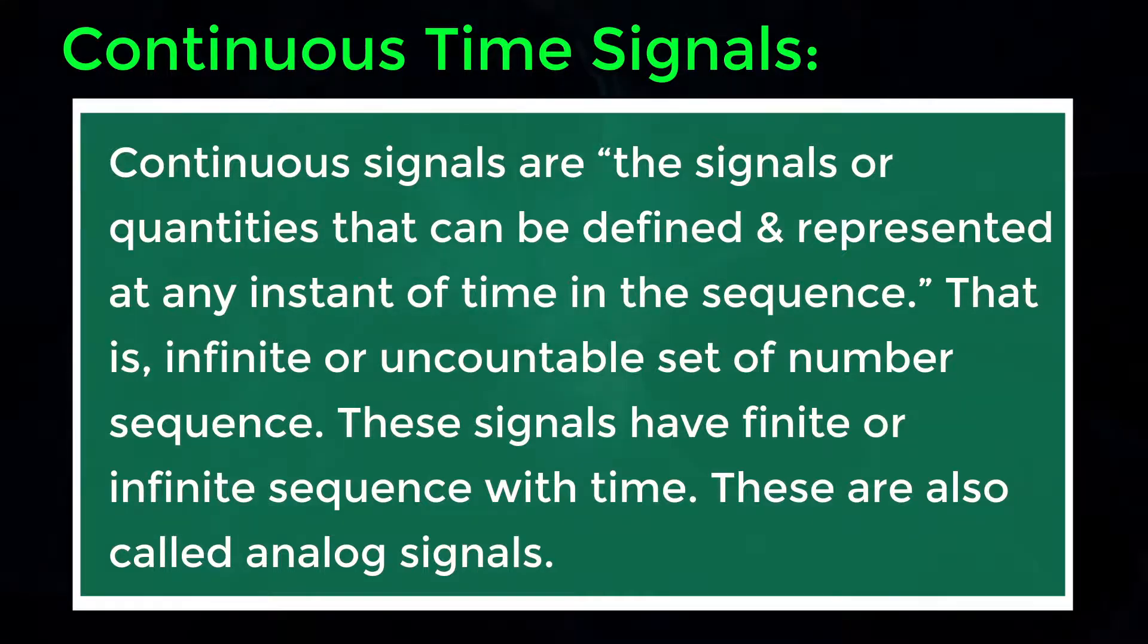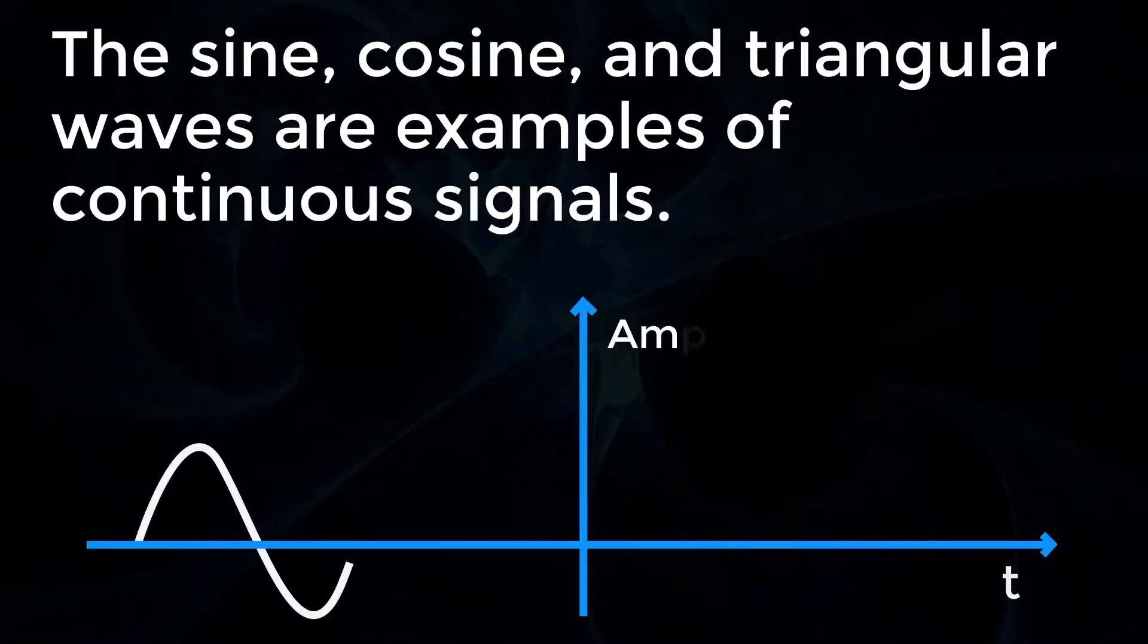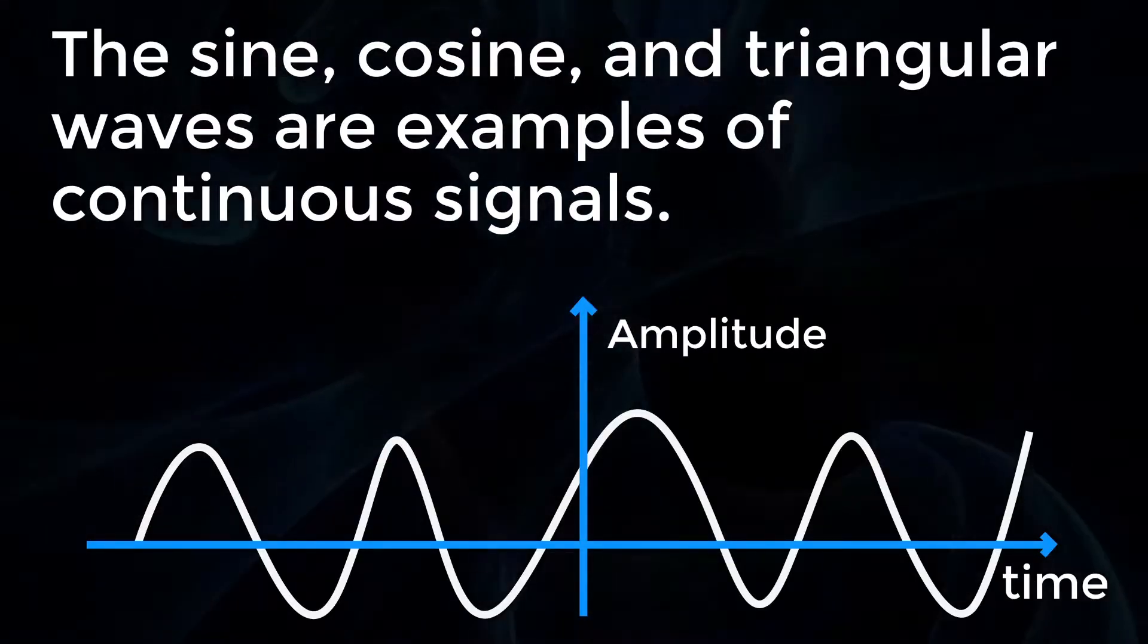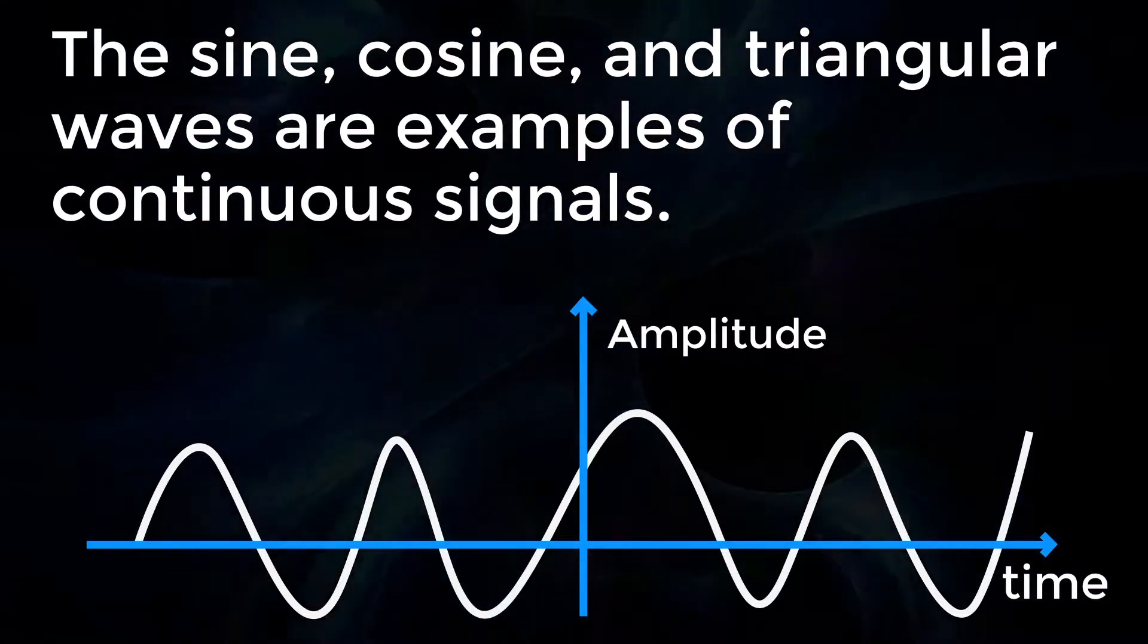These are also called analog signals. The sine, cosine, and triangular waves are examples of continuous signals.